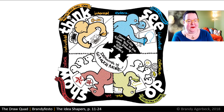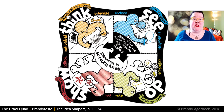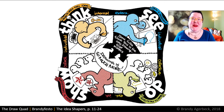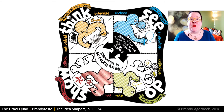Let's put the slide back on so it's easier for people to see. We can see the four quads and people can think about which quad their work falls in. If folks are interested in this model, you can find it on my homepage at loosetooth.com — it's in the Brandifesto, a free PDF on the homepage. You can also find it explained at the beginning of The Idea Shapers. And on my YouTube channel, if you search 'draw quad,' you'll find several different videos.